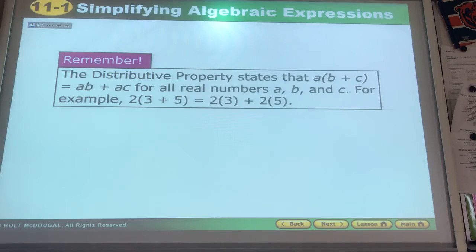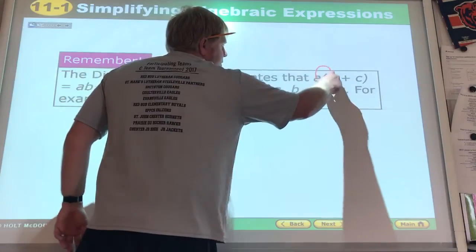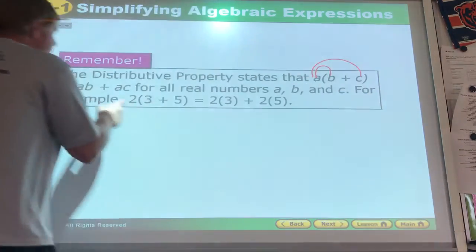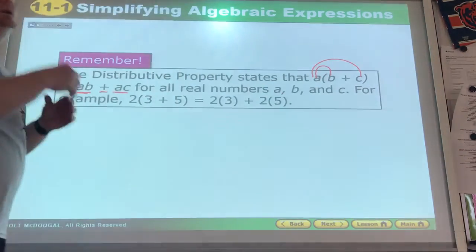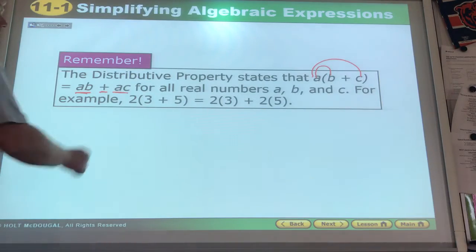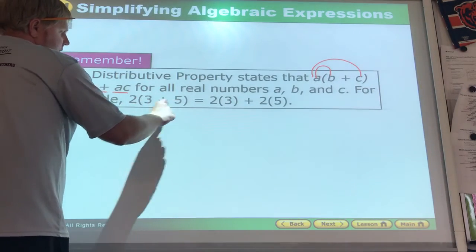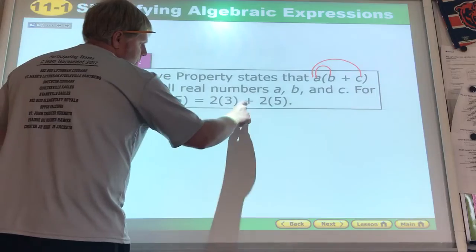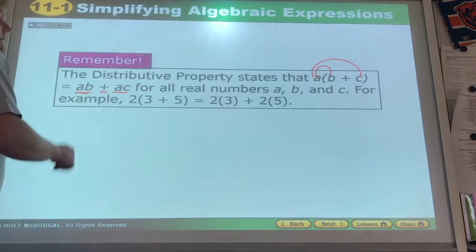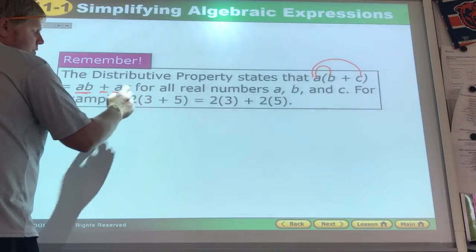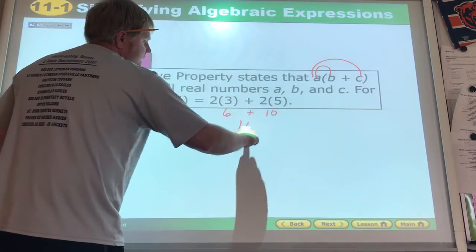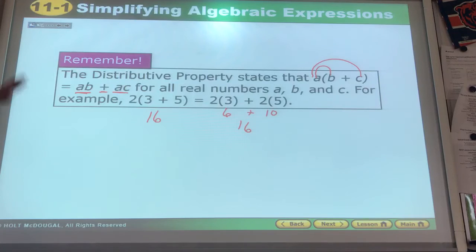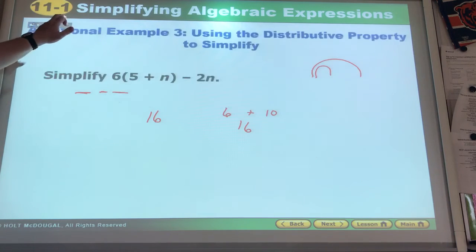Distributive property. A times B, A times C. AB plus AC. It's a way to expand that problem. 2 times 3 plus 5, so it could be 2 times 3 plus 2 times 5. You add those together. 8 times 2 is 16. This is 6, this is 10. That's 16 as well. It doesn't change anything, it's just a way to use the problem.